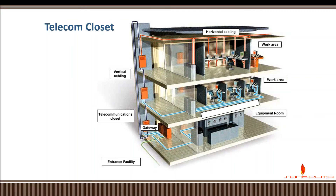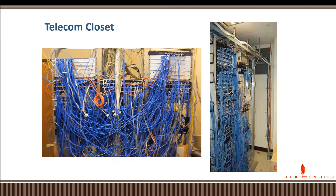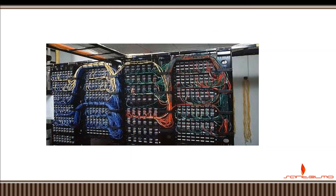Inside the telecommunication closet, it basically contains switches used for distribution. In some organizations, a typical telecommunication closet can look messy, with unorganized connections and single-colored UTP cables. A good design of a telecommunication closet should have organized cables using color-coded cables — for instance, all blue goes to this area, all yellow to another, all green to another floor, and so on. That's the telecommunication closet or the intermediate distribution facility (IDF).